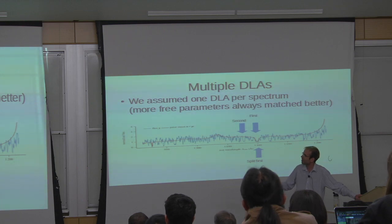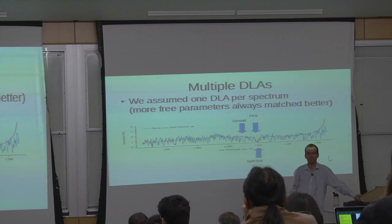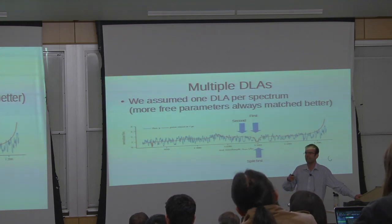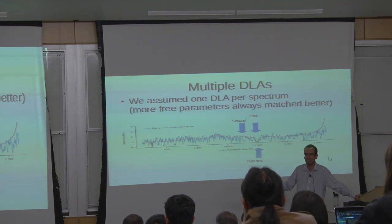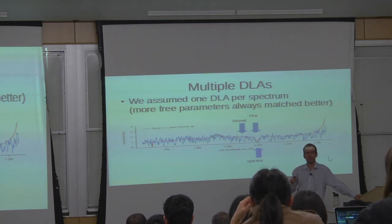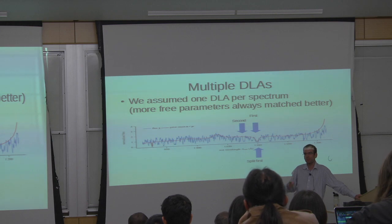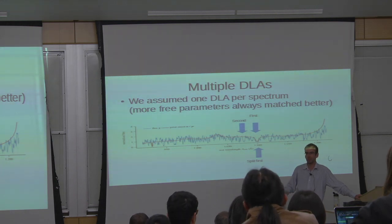Why do we need to care about multiple DLAs? When I published the first paper, I assumed one DLA per spectrum. The reason was that when I tried to add more DLAs, it always produced more of them. This is a general issue with machine learning and model selection: if you have a model with way more parameters, it's often going to find it easier to fit your data than a model with fewer parameters.